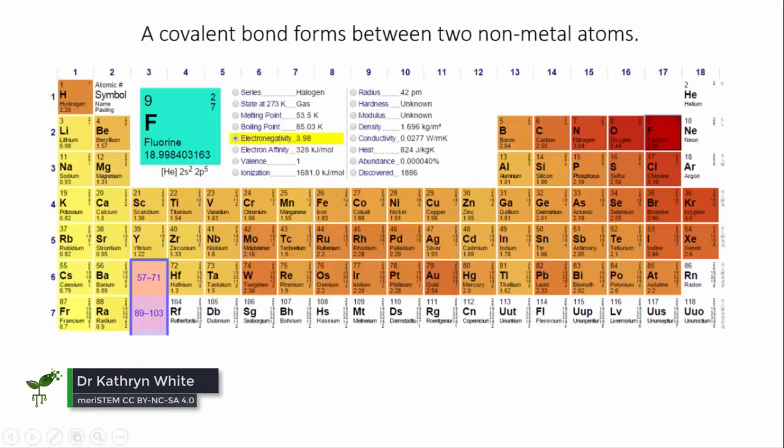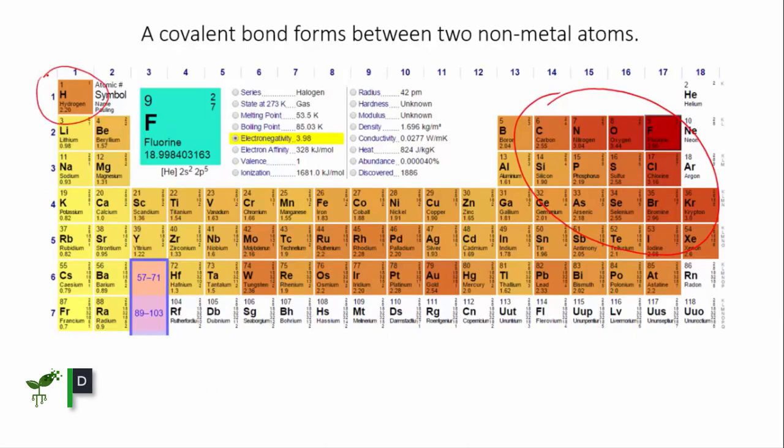A covalent bond occurs between two non-metal atoms. Non-metal atoms have relatively high electronegativity, so in order to get a full outer shell of electrons, the preferred method is for them to gain electrons.